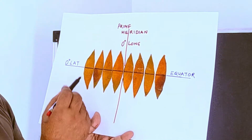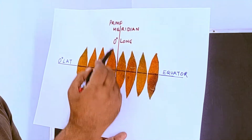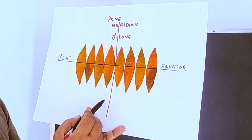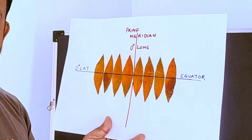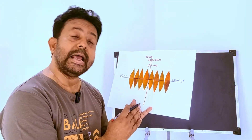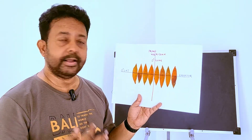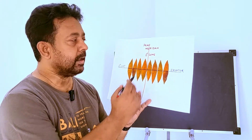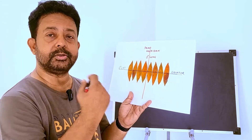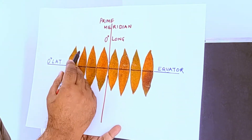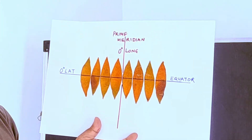So we have 60 slices, and we have a 0 degree latitude or the equator at the center line, and we have a prime meridian. Now the prime meridian is not going through any of these slices. These slices are called zones. In UTM projection, there are 60 such zones, and the prime meridian is not going through any zone — it is coming into the zone boundary. These are all the zone boundaries, at the edge of the orange peel.